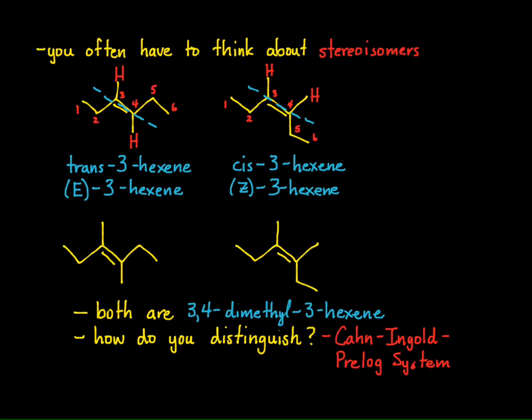And the priority system that we're going to use is called the Cahn-Ingold-Prelog priority system. Or, sometimes this is abbreviated CIP, the CIP system. And we'll see how we can prioritize groups coming off of an alkene carbon.